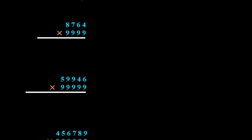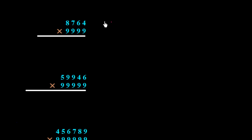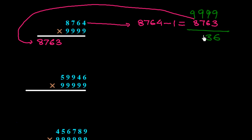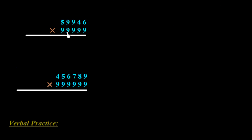With another example: take 8764. Subtract 1 to get 8763, which we write on the left side. Now subtract 8763 from 9999: 9 minus 3 is 6, 9 minus 6 is 3, 9 minus 7 is 2, 9 minus 8 is 1. So we write 1236 on the right side. The answer is 87631236. Similarly, we can multiply 5-digit numbers.